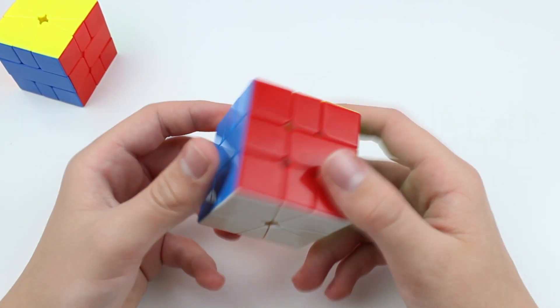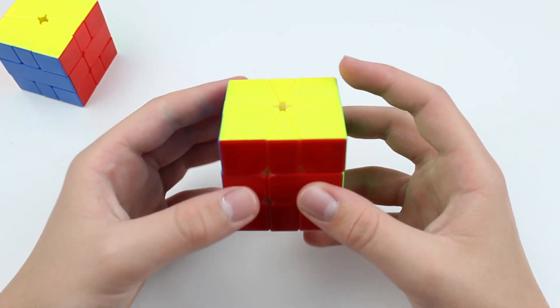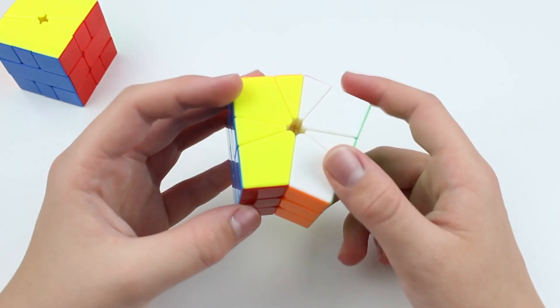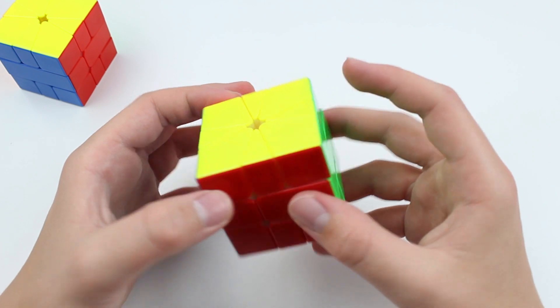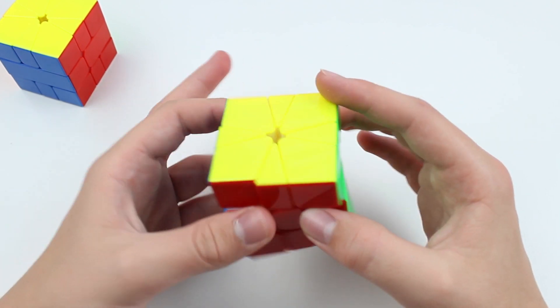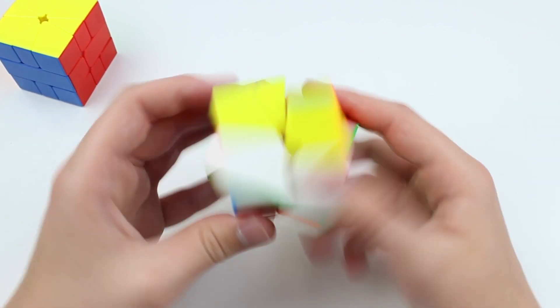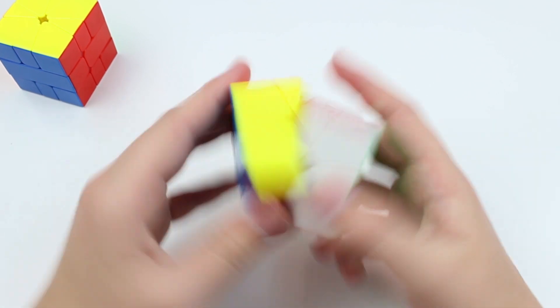Magnet strength in the Little Magic Square One M is quite nice. It's a bit stronger on the slice layer than on the top and bottom layers, which I think makes sense just in terms of how it helps your turning and everything.